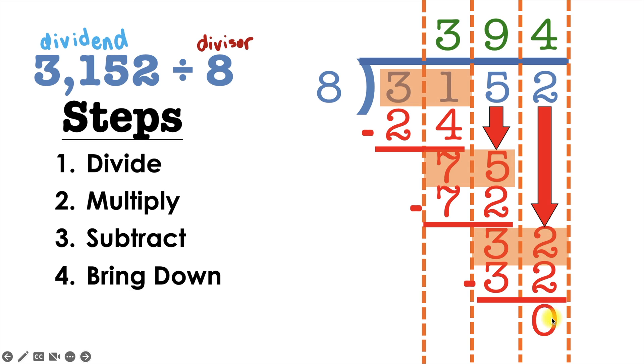Now the 0 remainder at the end is very important, because that's the sign that we're done, as long as we don't have any more numbers in the column to the right. And since that's the case here, we're done. Our final answer is 394. We could also say the quotient of 3,152 and 8 is 394.